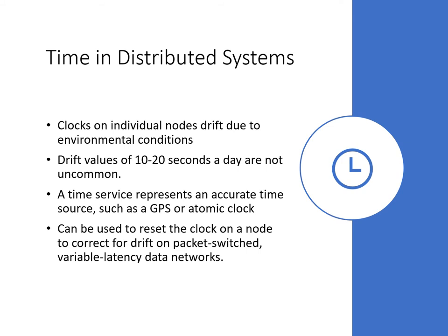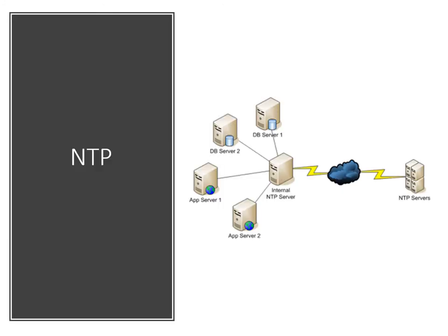Every node in a distributed system has its own internal clock. If all clocks were perfectly synchronized, we could simply compare timestamps of events to determine the precise order they occurred, and many distributed systems problems would go away. Unfortunately this is not the case. Clocks on individual nodes drift due to environmental conditions like changes in temperature or voltage — values like 10 to 20 seconds a day are not uncommon. If left unchecked, clock drift would render the time on a node meaningless. To address this, a number of time services exist — a time service represents an accurate time source such as a GPS or atomic clock used to reset the clock on a node.